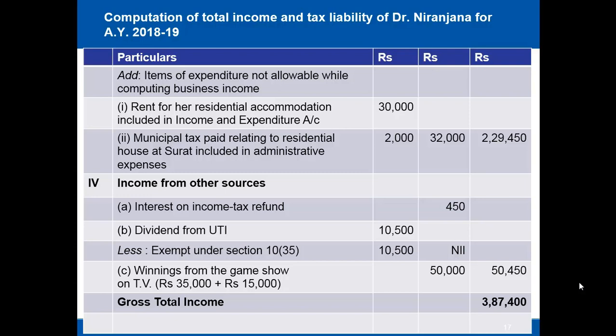For income from other sources: interest on income tax refund is rupees 450 (the rupees 5,000 principal is not income). Dividend from UTI is exempt under section 10(35), so it is nil. Winnings from the game show: the net amount of rupees 35,000 plus TDS of rupees 15,000 gives a gross amount of rupees 50,000. Total income from other sources is rupees 50,450, giving a grand total income of rupees 3 lakh 87 thousand 400.